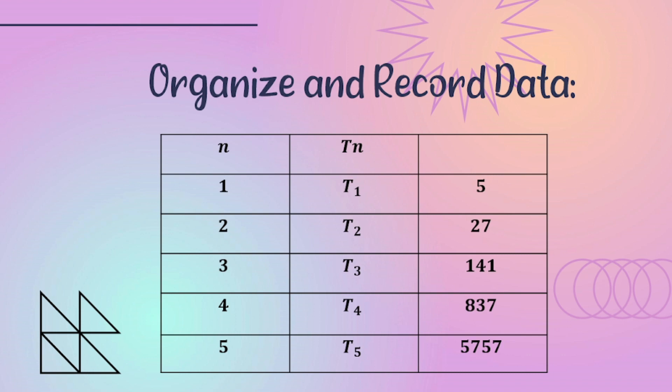If n is 4, t sub 4 equals 837. If n is 5, t sub 5 equals 5,757.